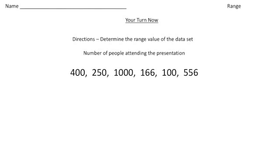All right, welcome back. For this problem, you determined the range value of the data set—the number of people attending a presentation. Remember that the range is the difference between the highest value and the lowest. It looks like this person had 1000 people attend a presentation, that's the highest number, and the lowest is 100.